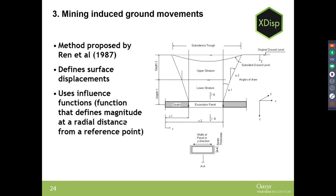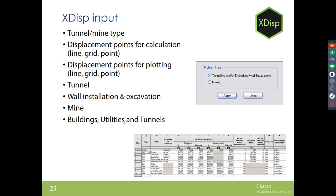Mining-induced ground movements are also an option within XDISP, though not demonstrated today. XDISP calculates surface displacements due to mines using the method proposed by Ren et al. It has been used on a number of projects, including projects in Yorkshire.